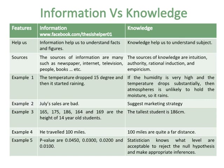Example 1 of information: the temperature dropped 15 degrees and then it started raining. Example 1 of knowledge: if the humidity is very high and the temperature drops substantially, then the atmosphere is unlikely to hold the moisture, so it rains.